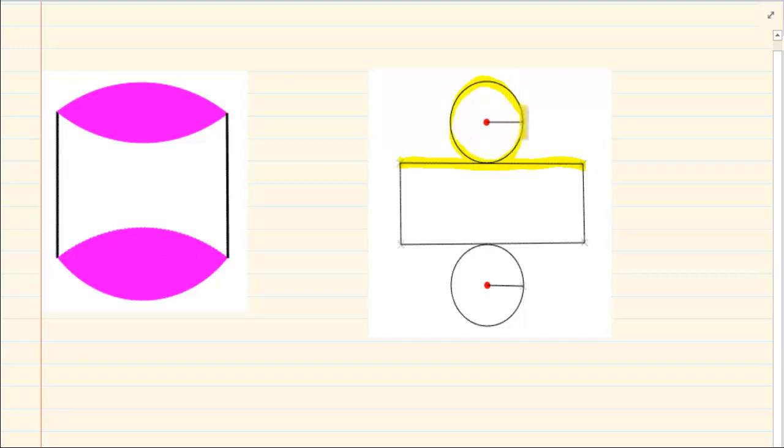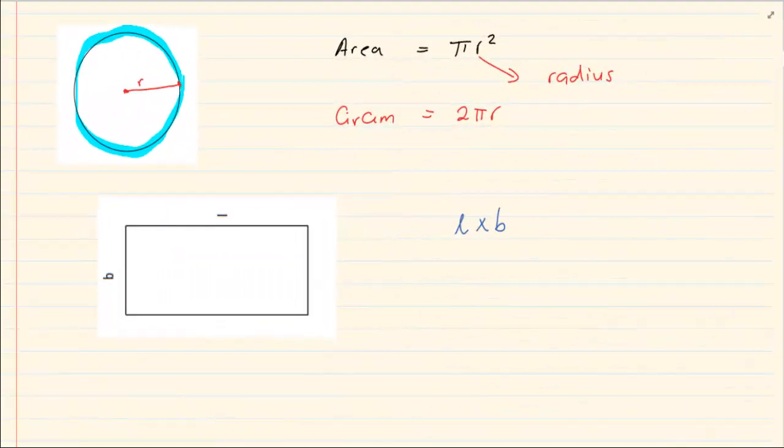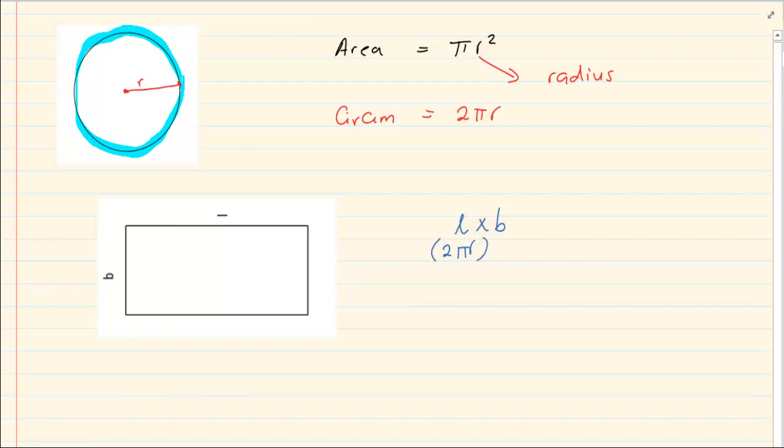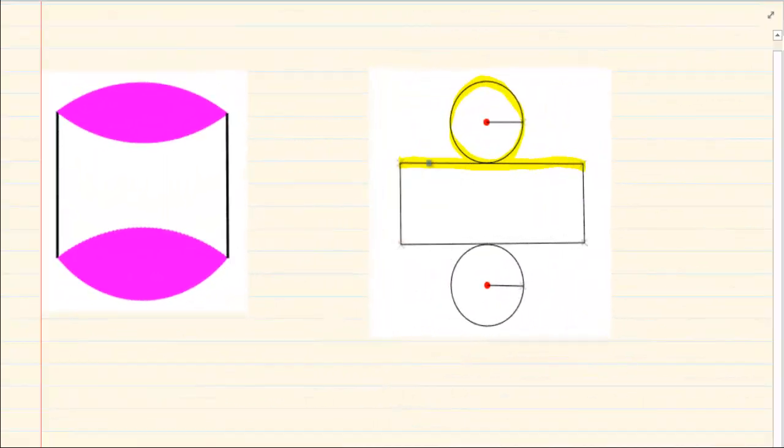This length is actually the circumference of the circle. Can you see? So instead of saying length times breadth, what do we say? We say 2 pi r which is the length. And what is this distance here? This distance is the same as this distance which is what we call height.